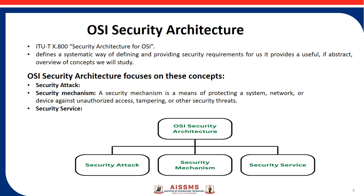Now we will see the OSI security architecture. As discussed, it defines the security services and security mechanisms that can be used at each of the seven layers of the OSI model to provide security for data transmitted over the network. These security services and mechanisms help ensure the confidentiality, integrity, and availability of data. OSI architecture is internationally accepted as it lays out the flow of providing safety in an organization.